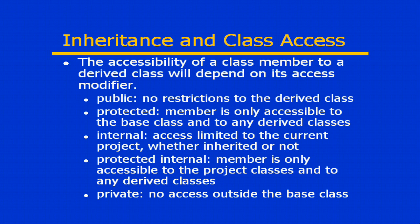We have the internal access modifier, which allows us access only within that current project. Now this is true whether it's inherited or not. So technically you could have class A, which provides the base class to another class B, that's in a completely separate assembly or separate project, and because of the internal accessibility, it would not have an accessible member. Protected internal means that that member is available within the current project, but also to derived classes, whether those are in the current project or not.